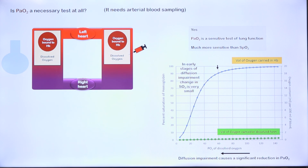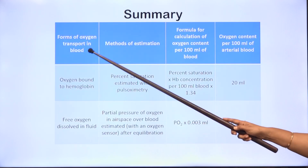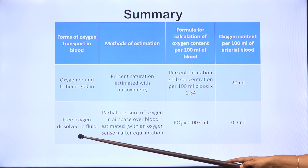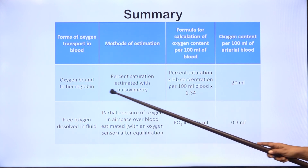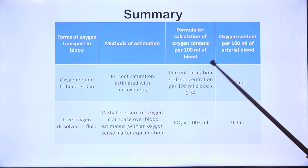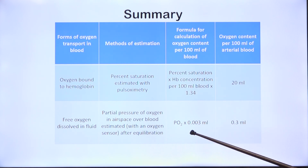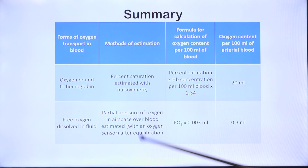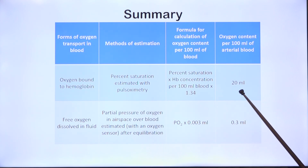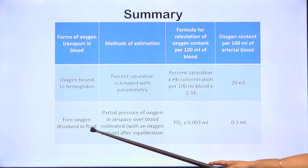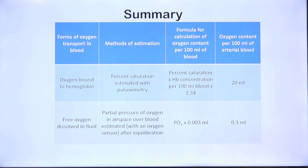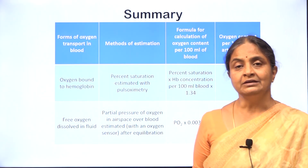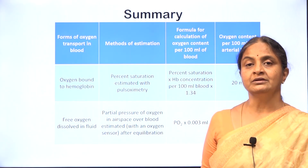In summary, we have discussed the forms of oxygen transport in blood, methods of estimation of each form, formulae for calculating total oxygen carried in 100 ml of blood, and the actual oxygen content of arterial blood: 20 ml per 100 ml bound to hemoglobin and just 0.3 ml per 100 ml dissolved in liquid. The next session will be on tissue hypoxia. Thank you for your attention.